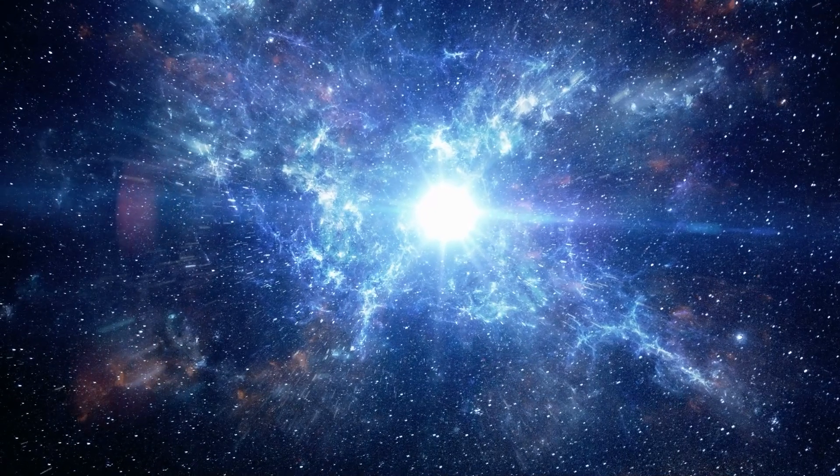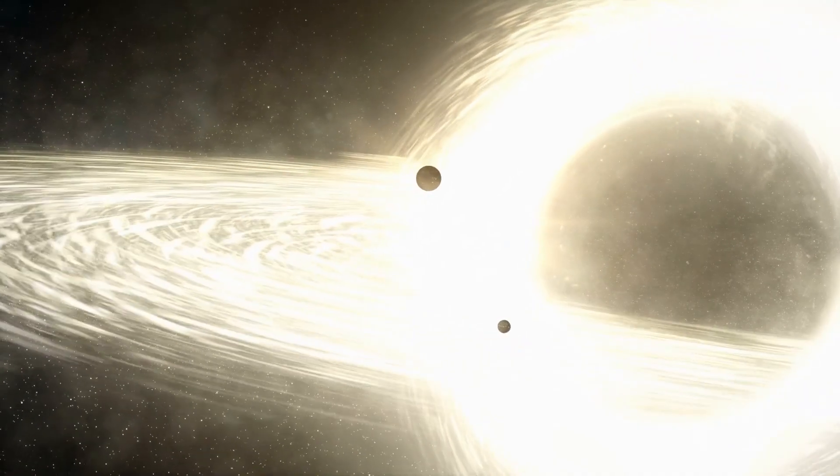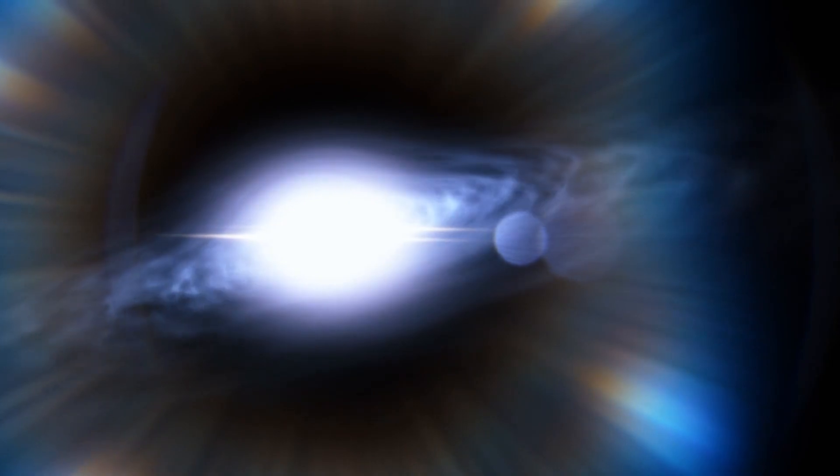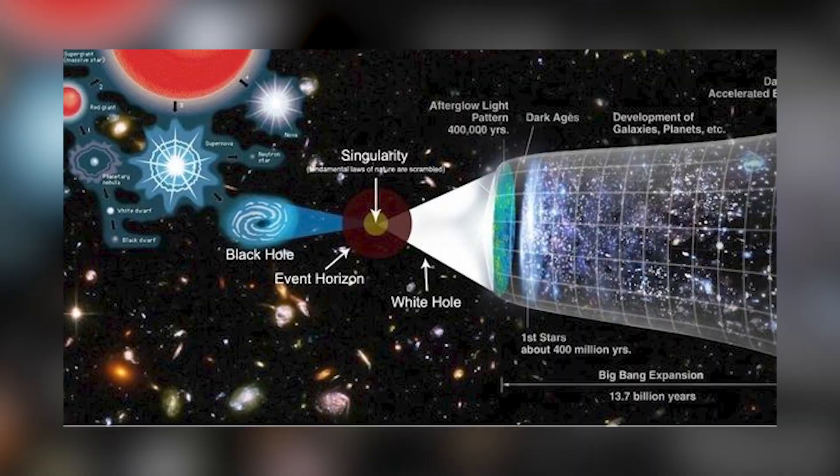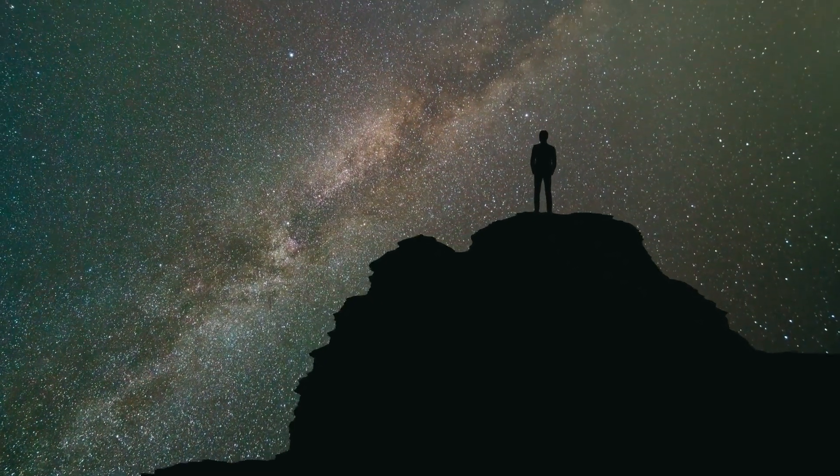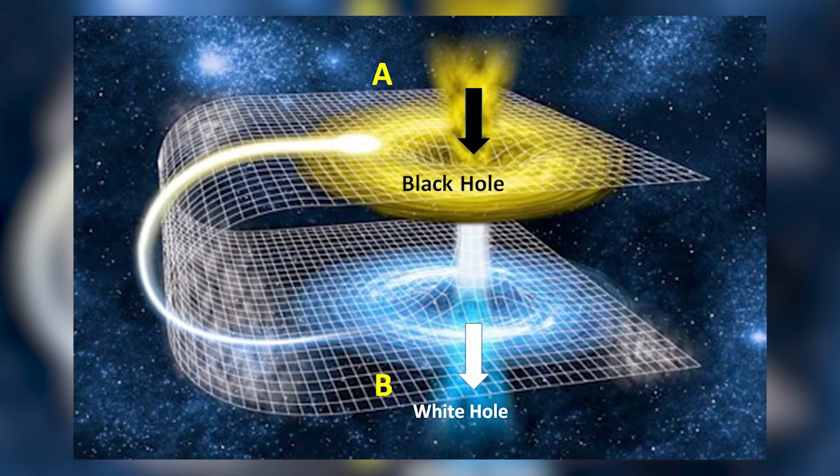White holes are hypothetical regions in the cosmos that operate in a manner that contrasts with that of black holes. Just as nothing can escape the gravitational pull of a black hole, nothing can enter a white hole. White holes were initially perceived as products of general relativity, emerging from the same equations that give rise to their collapsed star counterparts, black holes. However, more recently, certain theorists have wondered whether these paired distortions of space-time might actually be two facets of the same phenomenon. In the language of physics, a white hole is related to a time reversal of a black hole,